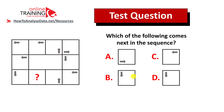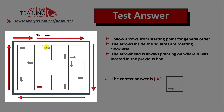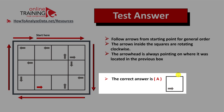Did you figure out the answer? Let's continue to see how we can get to the correct solution together. There are a couple of tricky parts about this question. Number one is the general flow of squares, and then there is a sequence of arrows inside the squares. We're starting the flow in the middle of the upper row, and you need to follow the red arrows. The arrows inside the squares rotate clockwise, and the arrowhead always points to where it was located in the previous box. So the correct answer here is choice A.